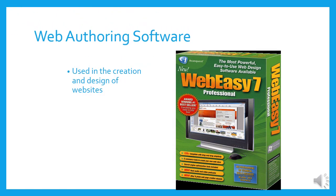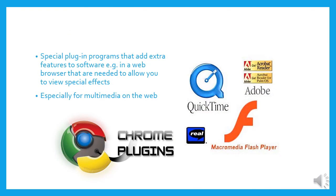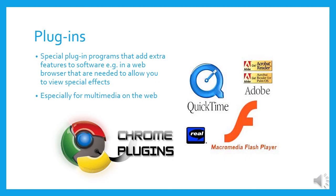Web authoring software is specially made to design web pages or websites. Then you get plugins — special little programs that add extra features to software. For example, in a web browser, if you want to allow special effects, you can get something like QuickTime or Macromedia Flash Player. Often when you're using a web browser and you want to add multimedia, you will need a plugin.